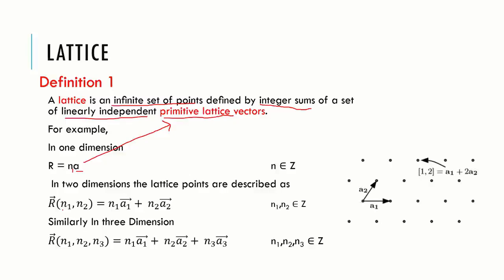Similarly, point (n1, n2) can be obtained by lattice primitive vectors a1 and a2 as sum of n1 times a1 and n2 times a2. For instance, here point (n1, n2) is sum of n1 times a1 and n2 times a2.